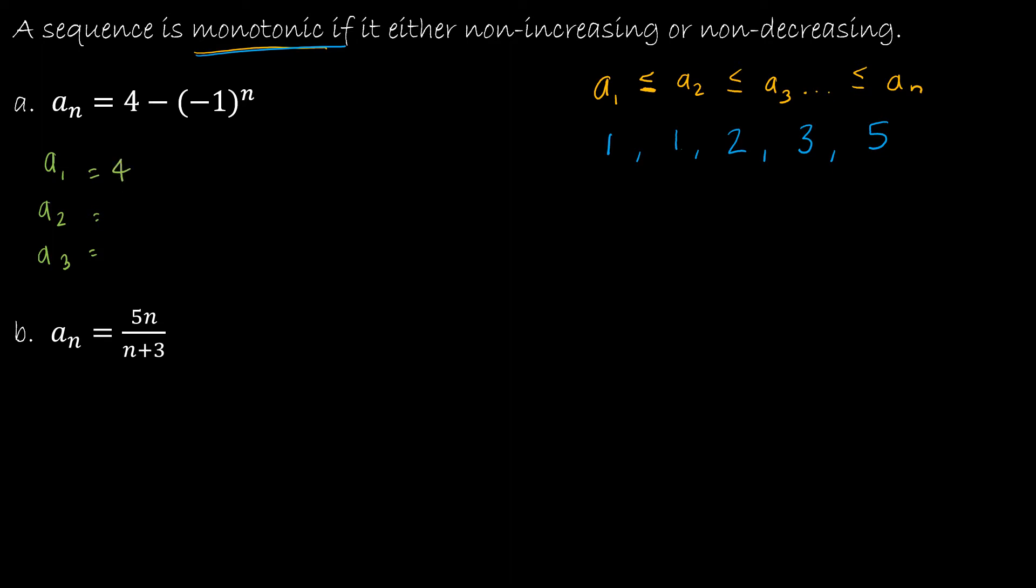Plug in 1 to get 4 minus (-1) to the first. So 4 minus negative 1 is 4 plus 1 or 5. 4 minus (-1)² would be 4 minus positive 1, which would be 3. 4 minus (-1)³ would be 4 minus negative 1, which is 5. So I can stop right there. This decreased and then it increased. So it's not monotonic because it decreased and increased in the same function. So this is not monotonic.